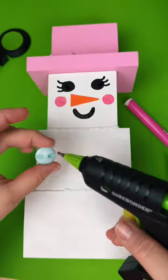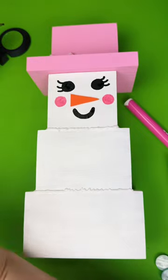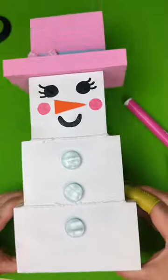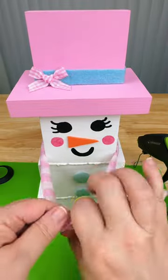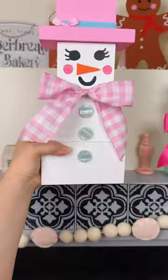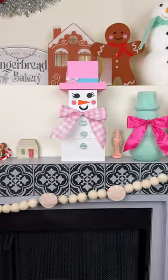Then we're going to glue on the little buttons down the center of the snowman. And then we're going to add our little gingham pink ribbon and tie a little bow. And she's done! How cute is this? Check out the full tutorial over on my blog. Happy holidays everyone!